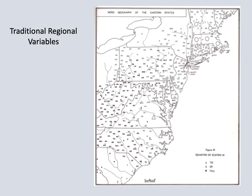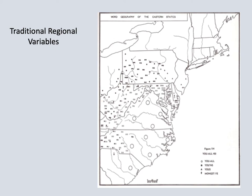Here we see an example of a preposition difference that still has some relevance today. When it's 10:45, some people might say it's quarter to 11, common in many parts of the South. Quarter of 11 would be the usual term in New England, and in the Midlands it might be quarter till 11. Our final example of traditional variation is the second person plural: you all or y'all, more likely smushed together today, is of course familiar with the South. Some of you may have heard of the term youns or yins, particularly prominent in Pennsylvania and a well-known feature of traditional Pittsburgh working-class speech.